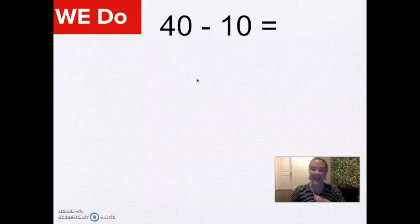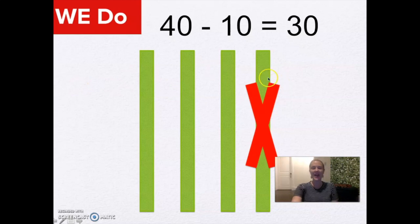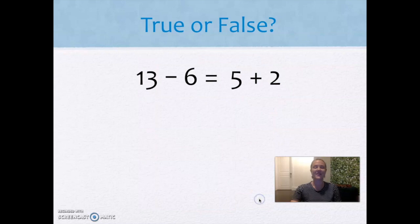All right. Let's take a look at 40 take away 10. Here we go. We're on a roll, friends. Keep it up. Okay. Let's compare. I have 40. I'm taking one ten away. 30. I bet many of you were able to do that quick in your head. Ten less than 40 is 30.